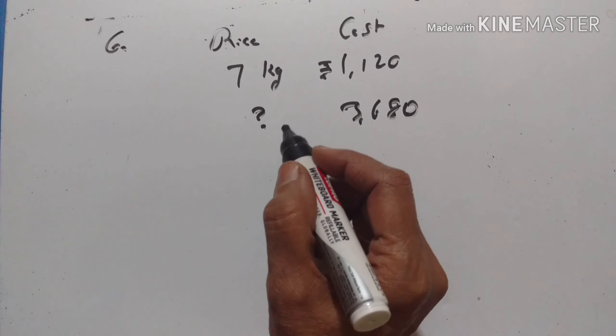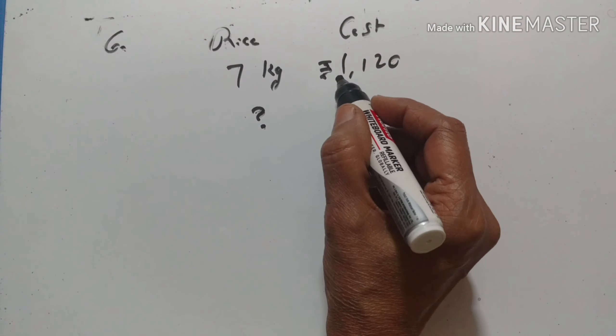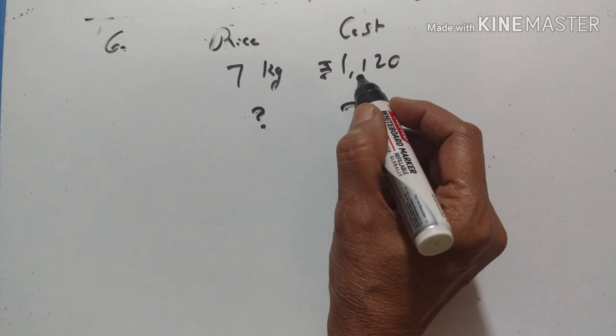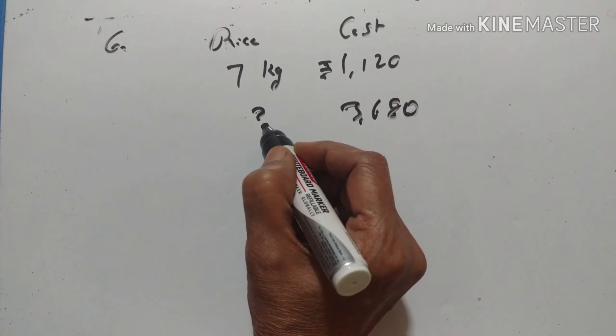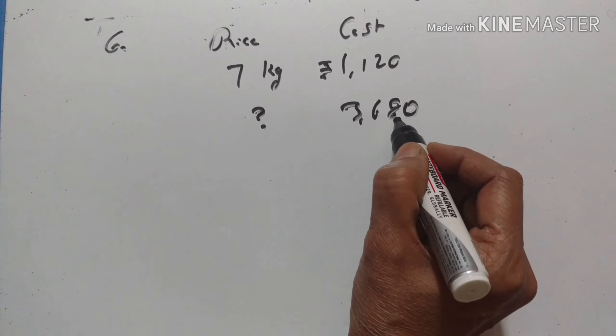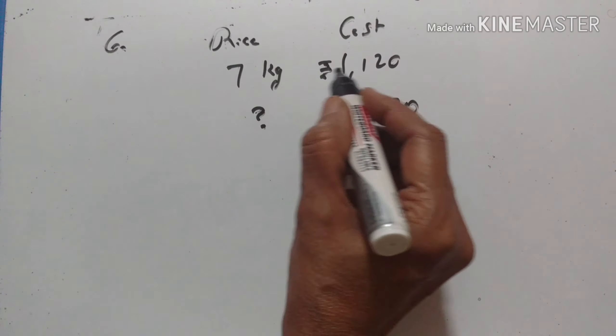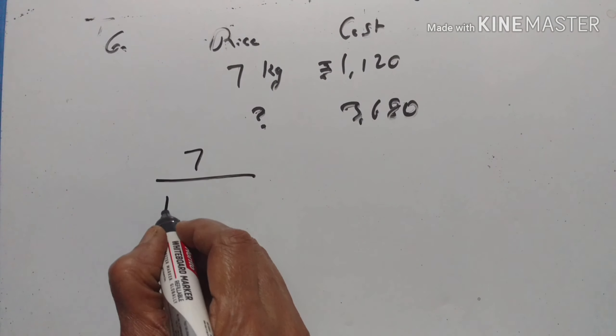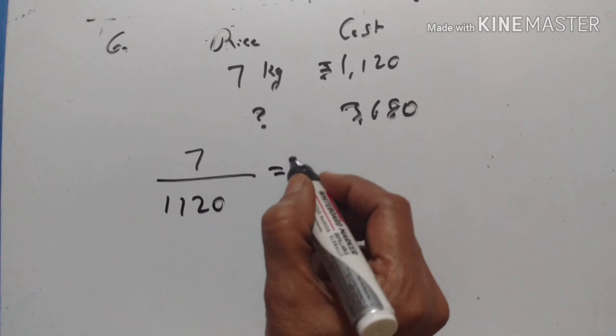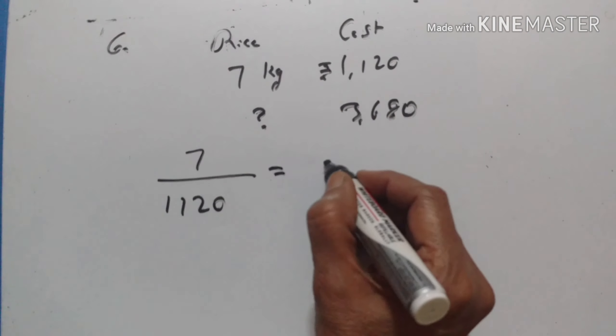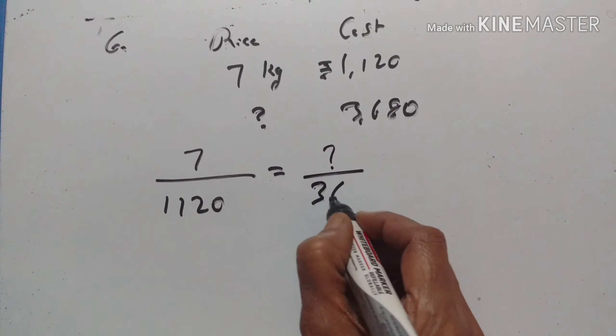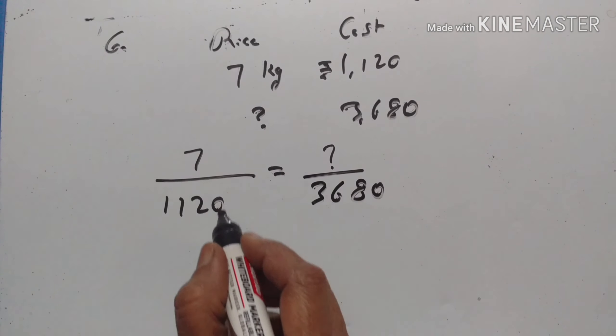Sixth problem. 7 kg of rice costs Rs. 1120. How much rice can be bought for Rs. 3680? X1 upon Y1, 7 upon 1120 is equal to X2 upon Y2, question mark upon 3680. So 7 into 3680 divided by 1120.